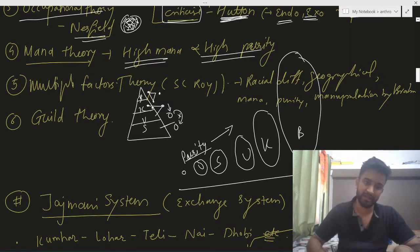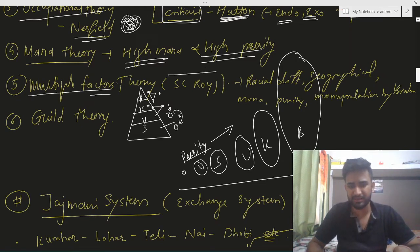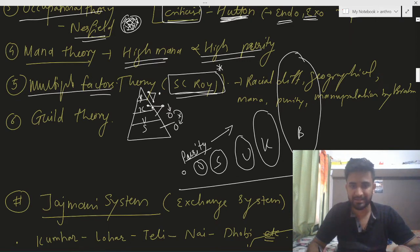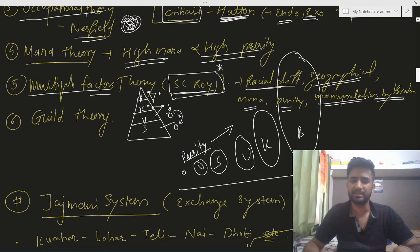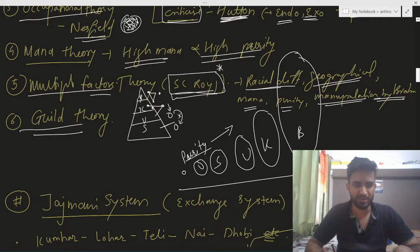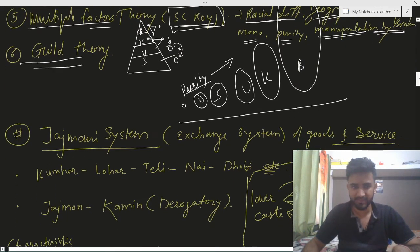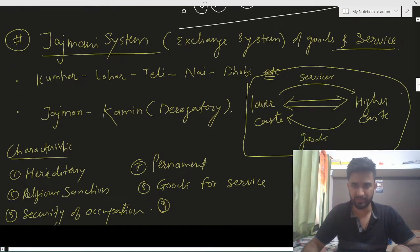The multiple factor theory was given by SC Roy, who said that racial differences, geographical differences, mana/purity, and manipulation by Brahmins were all reasons for the existence of the caste system. The guild theory is essentially the occupational theory — guilds are organizations where people work together, and occupational groups formed guilds to protect their trades.